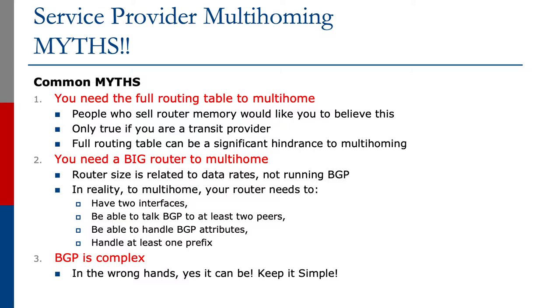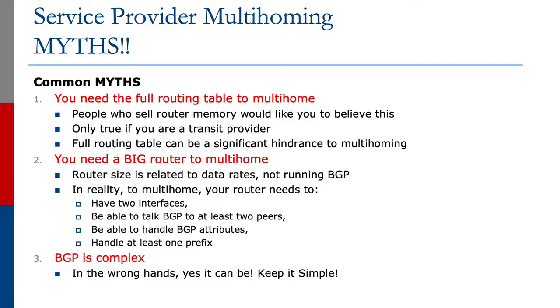The second myth is that we need a big router to multi-home. Router size is all about data rates, not about running BGP. If you saw what we were running BGP on in the early internet, you'd wonder how any of it actually worked. In reality, to multi-home your router needs two interfaces — one internal, one external — be able to talk BGP to at least two peers, handle the BGP attributes we've been discussing, and handle a few prefixes. A router used for multi-homing can be quite simple, small, and unsophisticated.